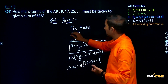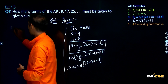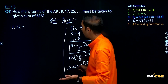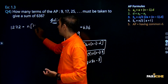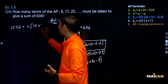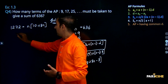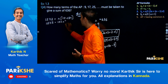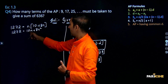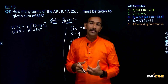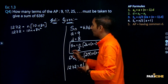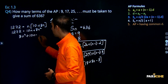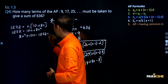So 1272 is equal to 10n plus 8n squared. Rearranging: 8n squared plus 10n minus 1272 is equal to 0. This equation that has formed is a quadratic equation.